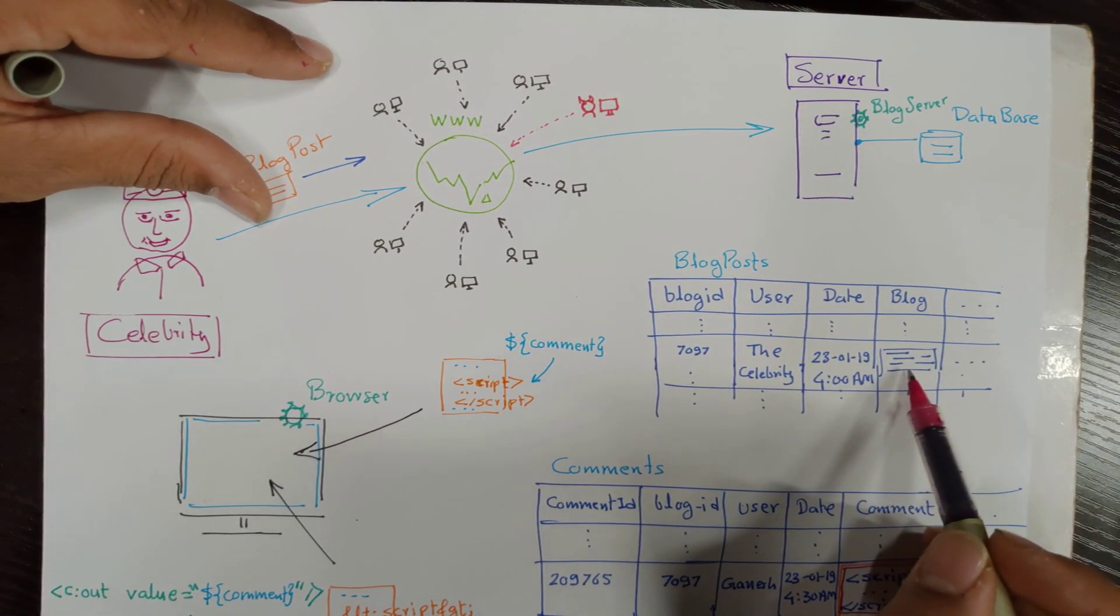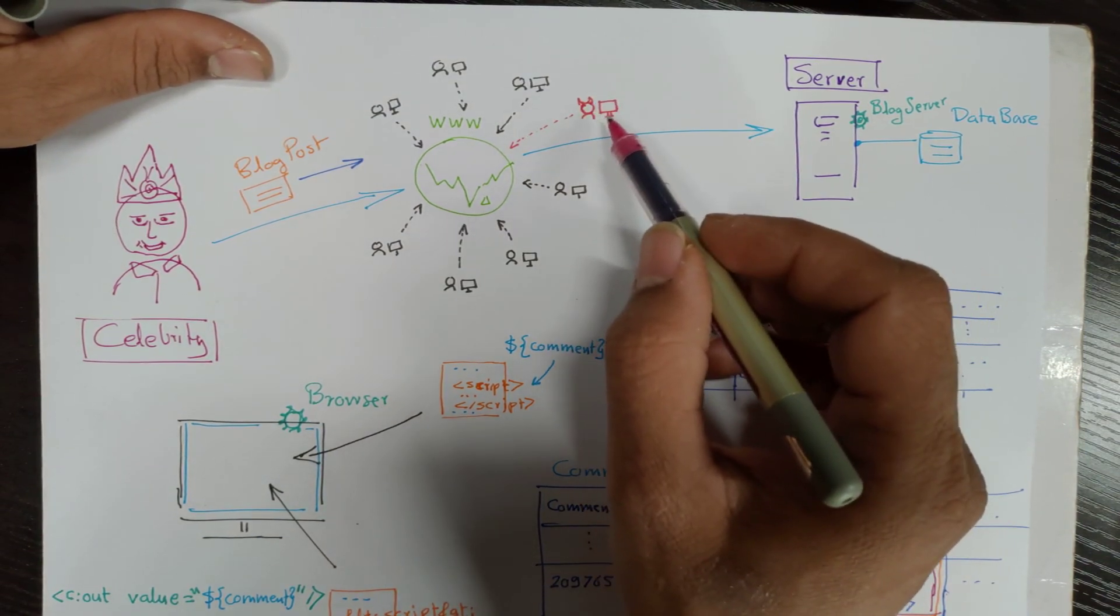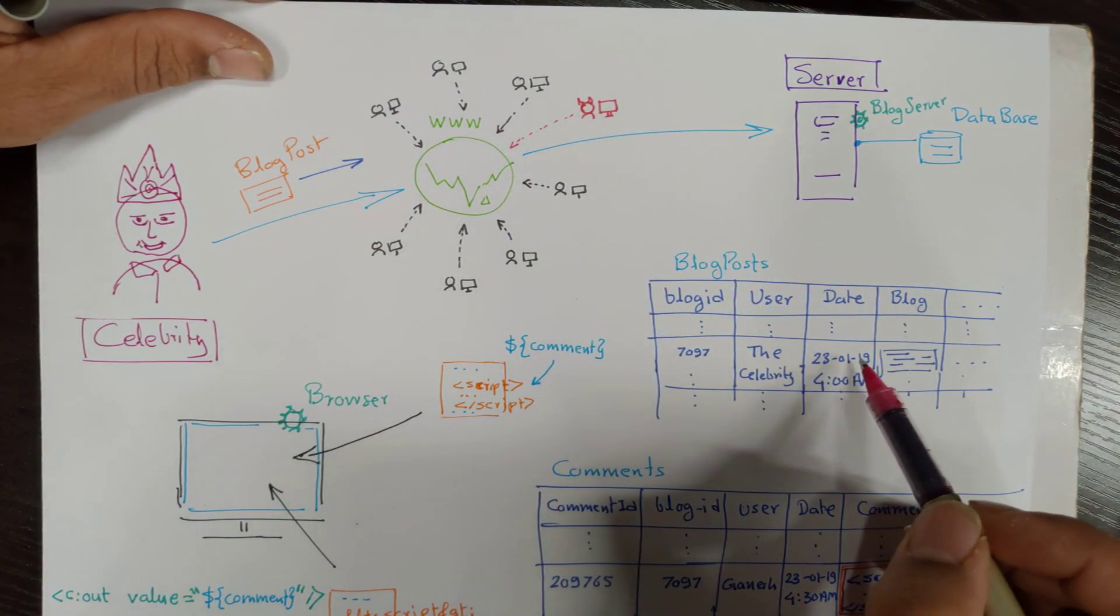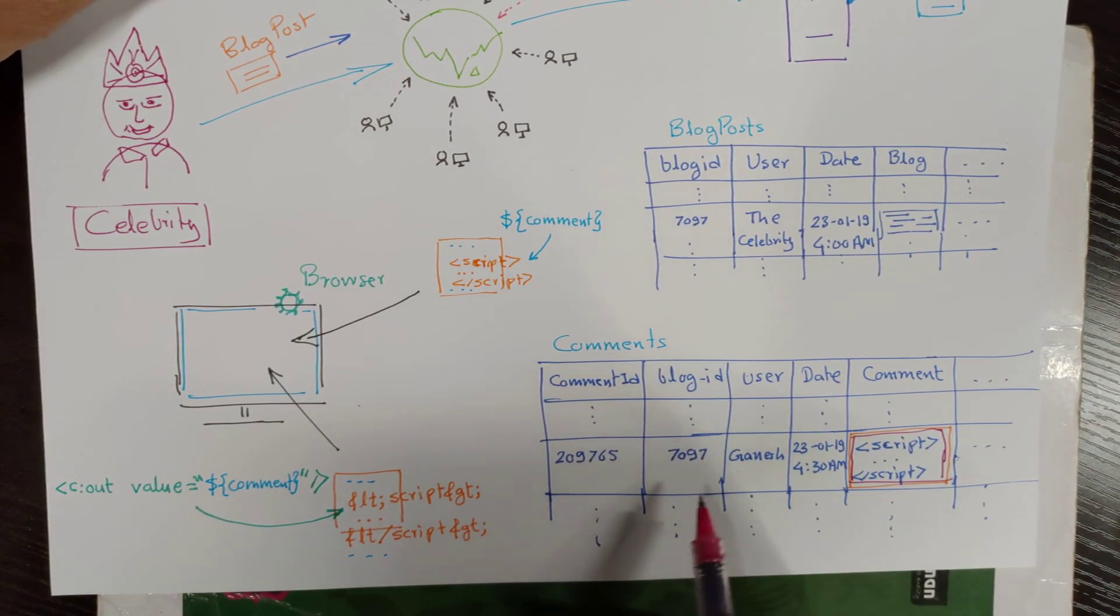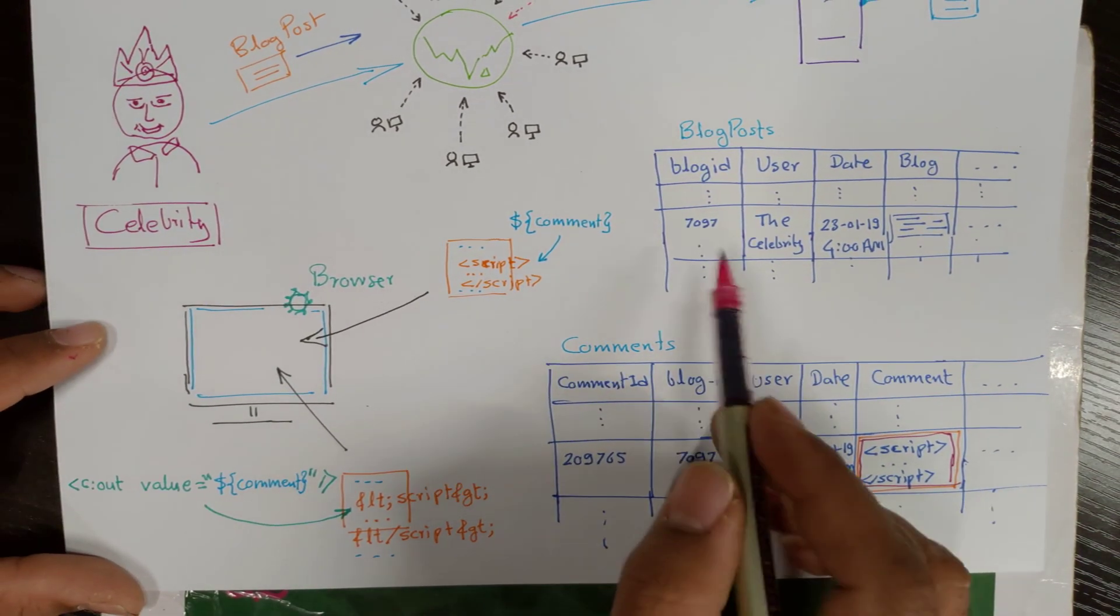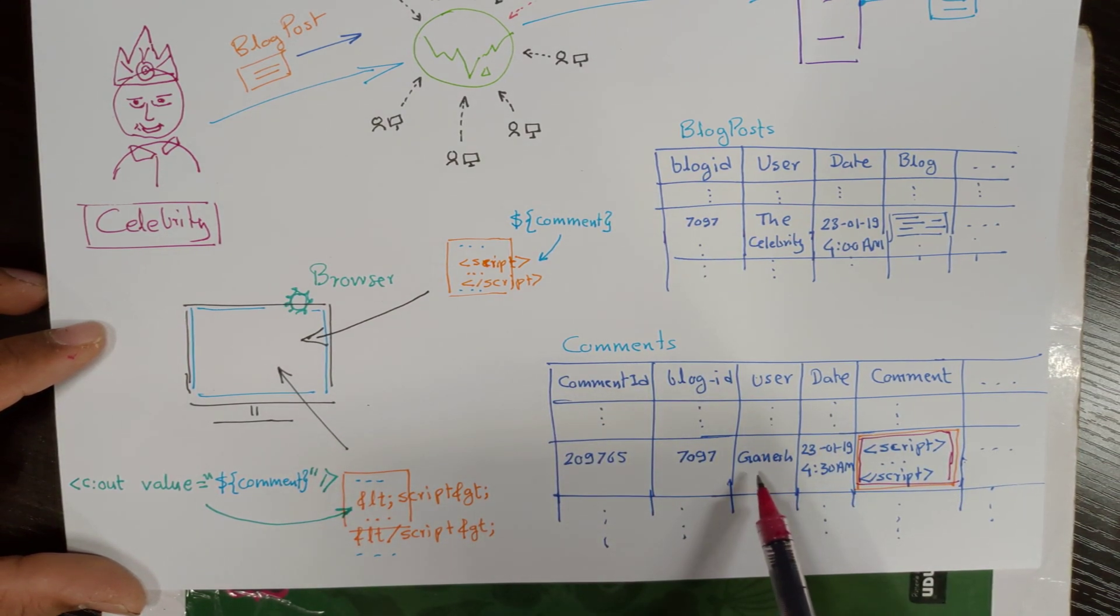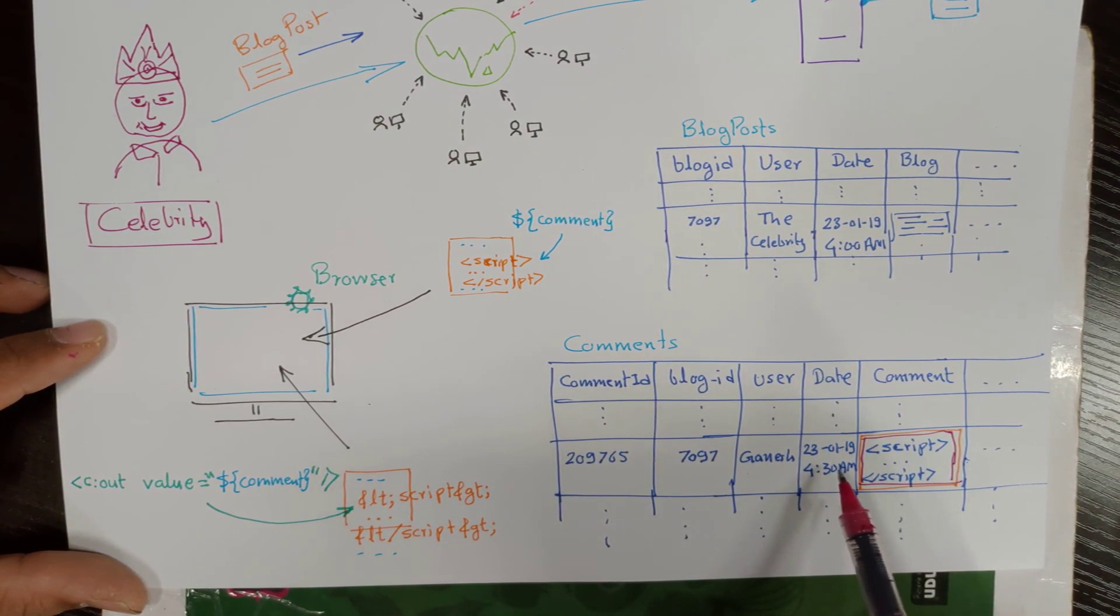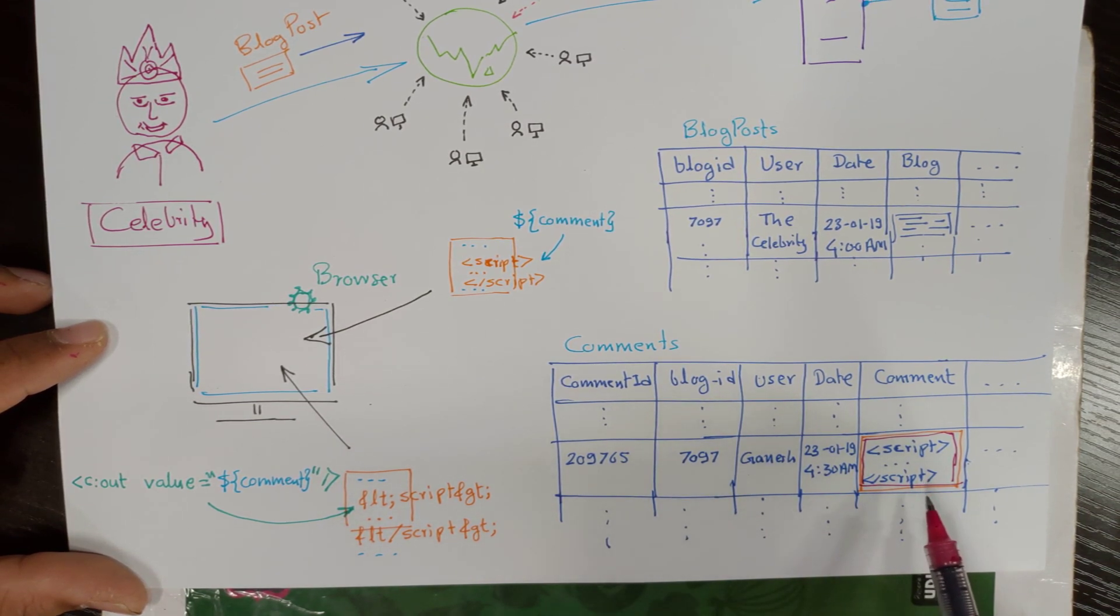And the blog. But the hacker commented on the blog and his comment saved into this table. So blog ID 7097, and the hacker posted his comment, which is not a simple text—a script, a malicious script.